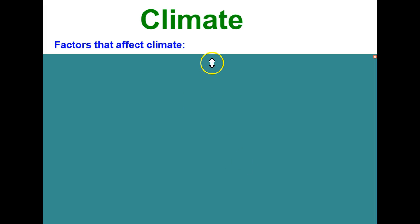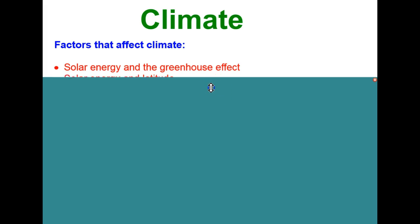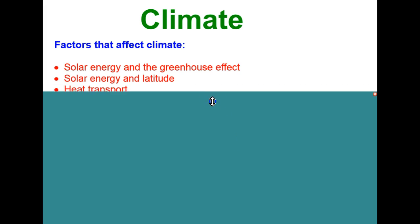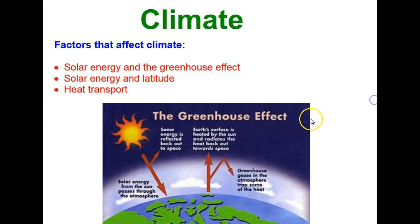Factors that affect climate include solar energy and the greenhouse effect, solar energy and the latitude on which you live, and heat transport. You'll notice what all these have in common is that they're all related to the energy provided to us from the Sun.